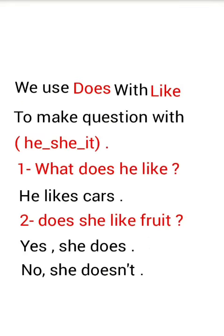We use 'does' with 'like' to make a question with he, she, and it. What does he like? He likes cars. Does she like fruit? The answer will be: yes, she does, or no, she doesn't.